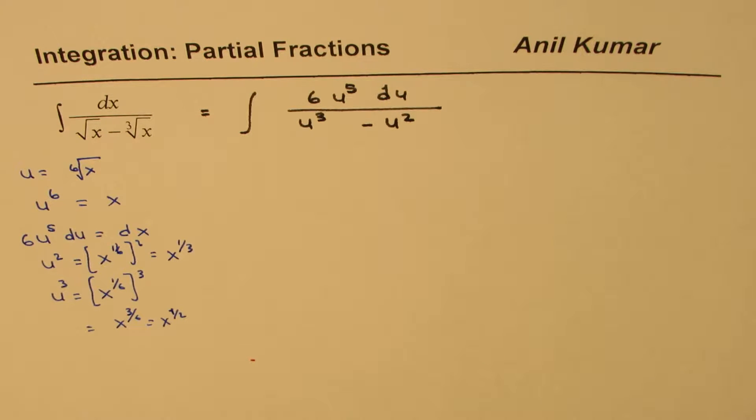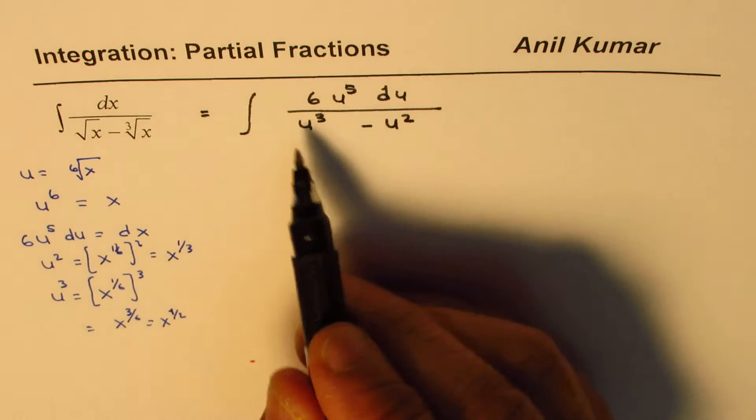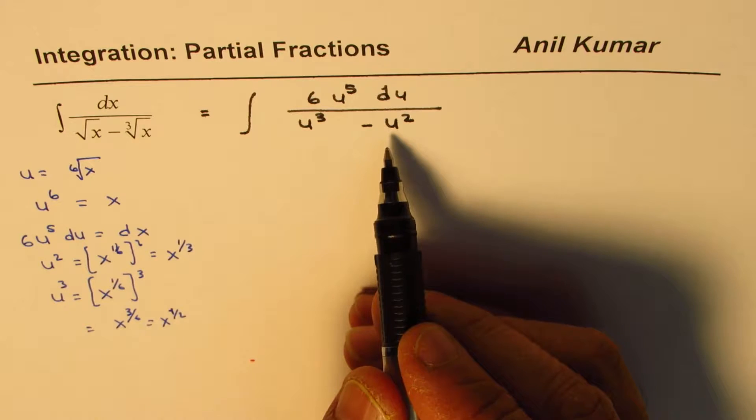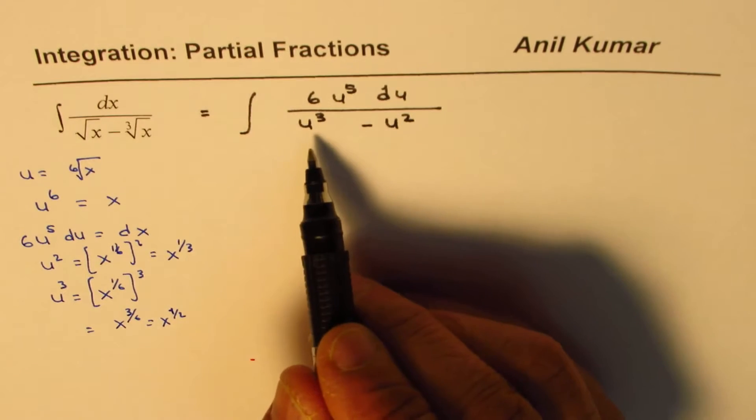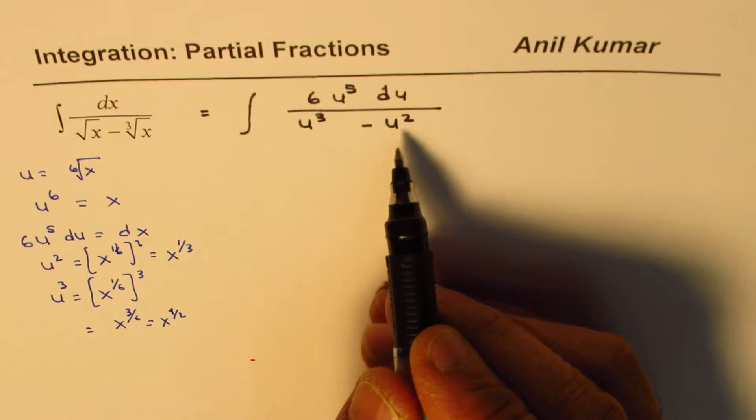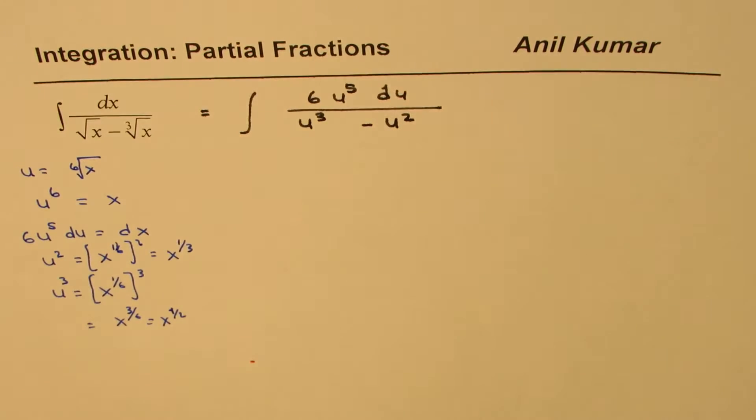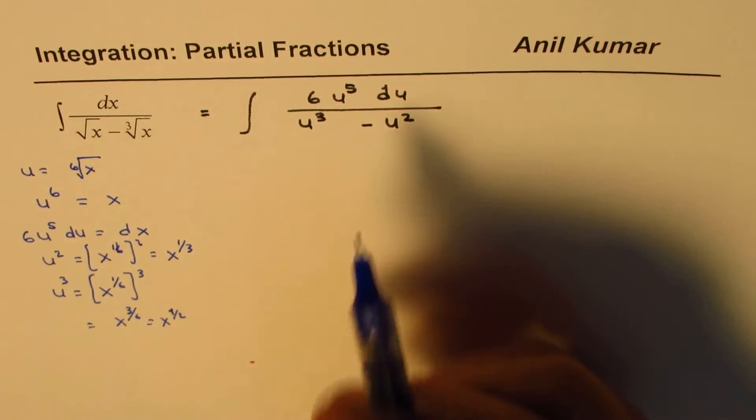What you notice at this stage is that the degree of numerator is actually higher than the degree of denominator. So we should divide now. So we need to divide and simplify.